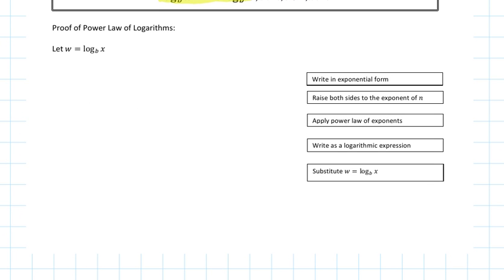Now how can we prove this? To prove this, we're going to let w equal log base b of x. The first thing we're going to do is write it in exponential form. To write it in exponential form, it's going to be b to the power of w equals x. We looked at this before — we can go from logarithm to exponential form.